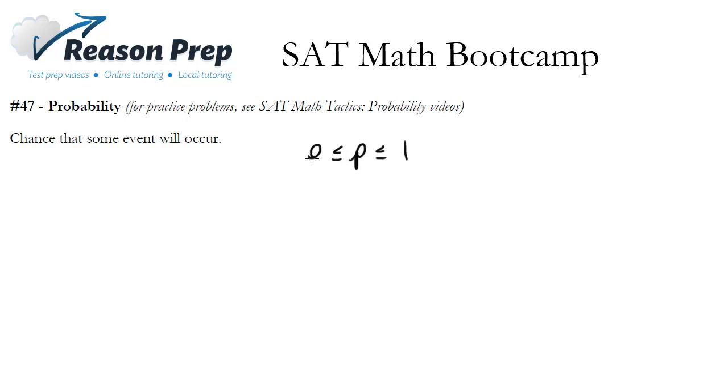A probability of 0 means something will definitely not happen, whereas a probability of 1 means something will absolutely happen. And you can't have a probability greater than 1, doesn't make any sense, nor can you have one less than 0, somewhere in between 0 and 1.